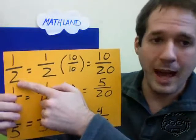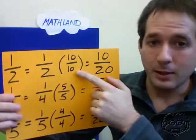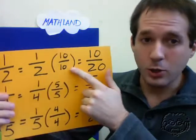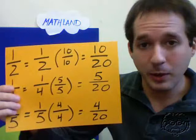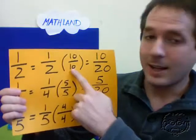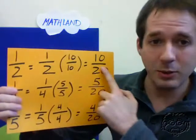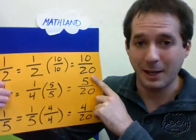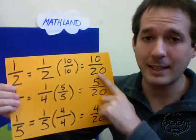First, we'll do 1 half. 1 half equals 1 half times 10 over 10. Now, 10 over 10 is just equal to 1. So multiplying 1 half by 10 over 10 doesn't change its value. It's the equivalent. The reason we chose 10 over 10 is because 10 is the factor that we need to multiply 2 by to get 20, because 20 is the denominator we want. So 1 half can be expressed equivalently as 10 over 20.